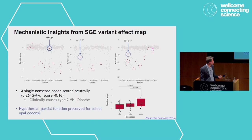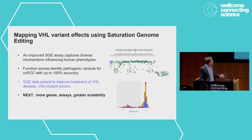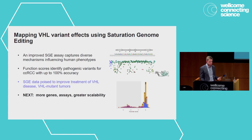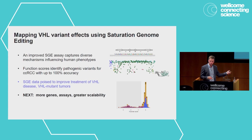To wrap up: the assay is working well to identify loss-of-function variants in VHL, and we can identify CCRCC-related variants with up to 100% accuracy depending on how we curate our gold standard variants. This dataset is really going to make an impact for how we treat VHL disease and VHL-mutant tumors. We drew two thresholds to call CCRCC-associated and neutral, but those thresholds should probably differ depending on exactly what type of VHL disease we want to assess. There are also many variants around minus 0.4 to minus 0.5 that we need to look at more carefully.